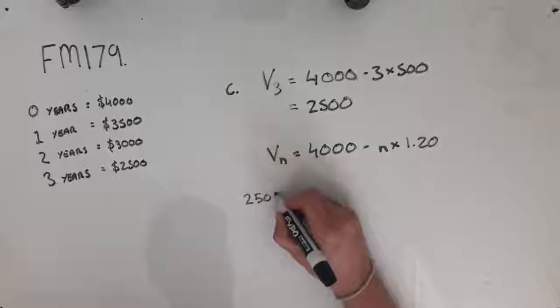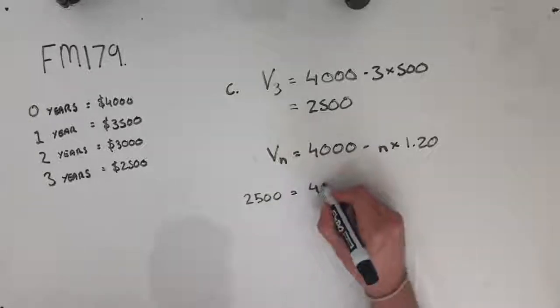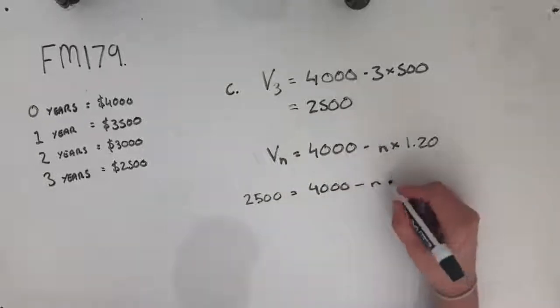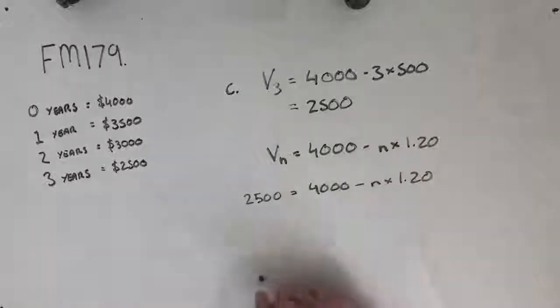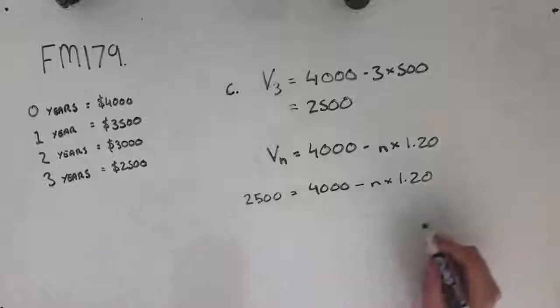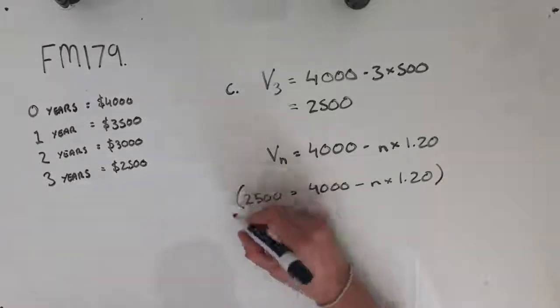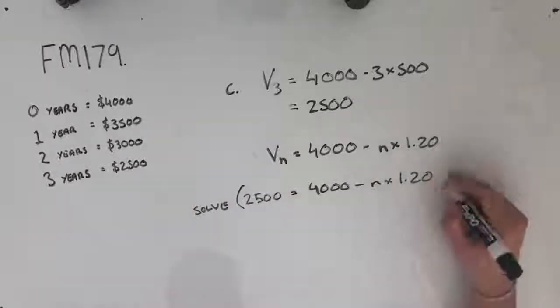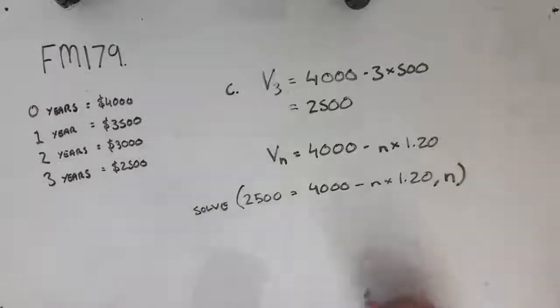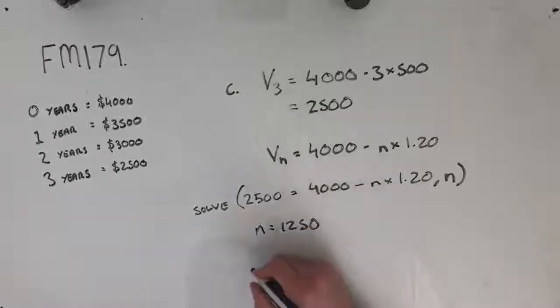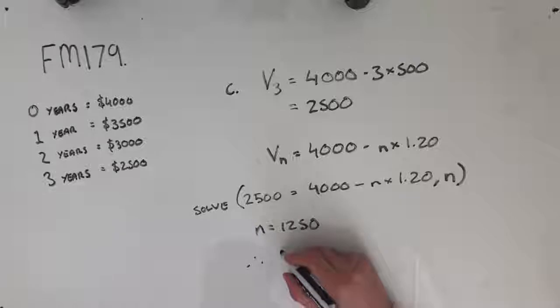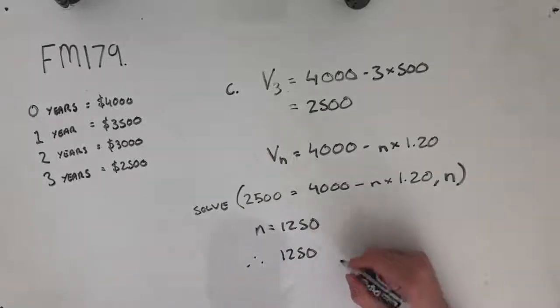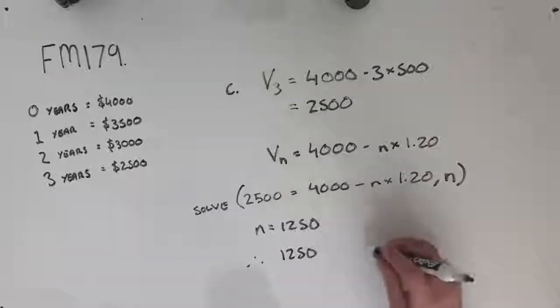So now if I tell this formula that the value of my chainsaw that I'm looking for is when it's worth $2,500, now I can figure out the value of n which will be the number of hours that it's used in order to give me a value of $2,500. So I simply take this formula, whack it into a solve function. This will drop out a value of n equals 1250 meaning that after 1250 hours of use, this is how many hours that the chainsaw was used over three years.